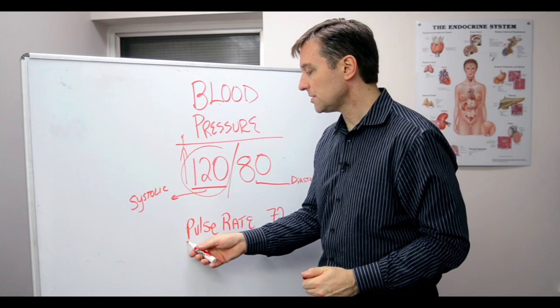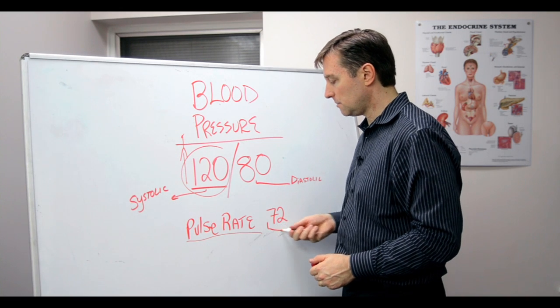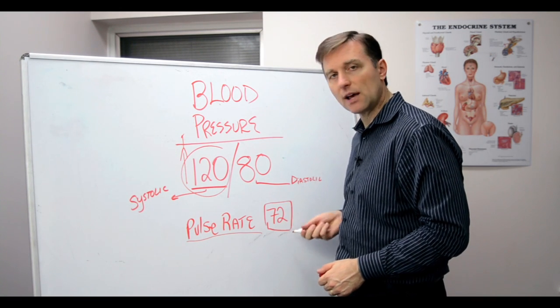Now, pulse rate. The pulse rate is the number of times the heart will beat in a course of a minute. Normal, it should be 72.